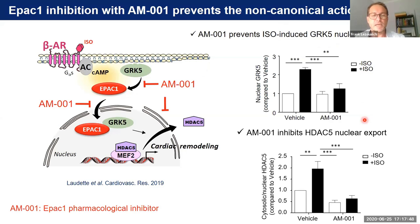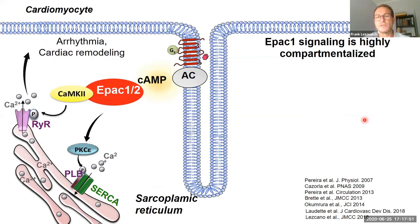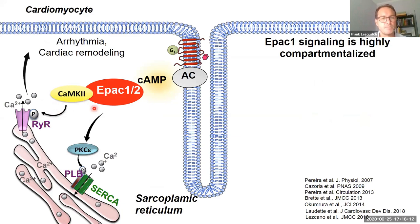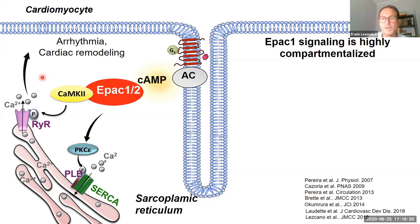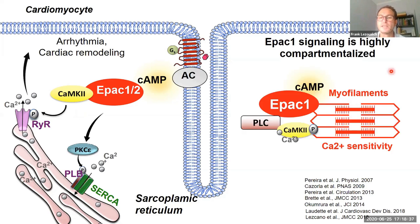Like cyclic AMP compartmentation, EPAC-1 is highly expressed in various subcellular compartments. It is not only expressed at the cellular membrane but has also been shown to be at the vicinity of the sarcoplasmic reticulum, where it probably regulates with EPAC-2 the activation of the ryanodine receptor. It is suggested that this EPAC-1/2 and CaMKinase 2 complex can induce calcium leak to promote cardiac arrhythmia. We also found that EPAC-1 is expressed at the myofilament where it regulates calcium sensitivity.